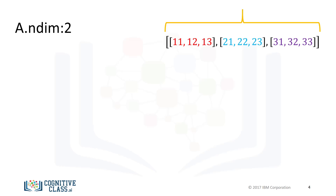The first list represents the first dimension. This list contains another set of lists, which represents the second dimension or axes. The number of lists the list contains does not have to do with the dimension, but the shape of the list.